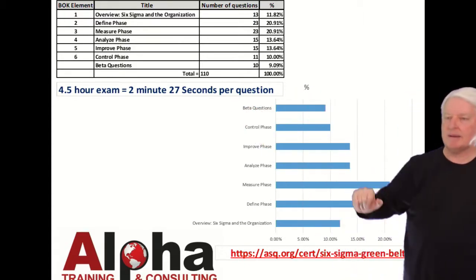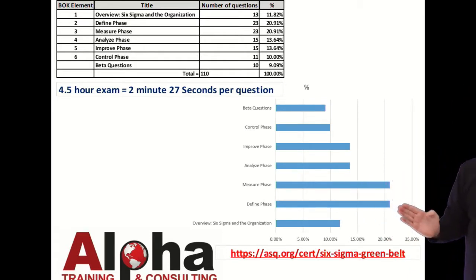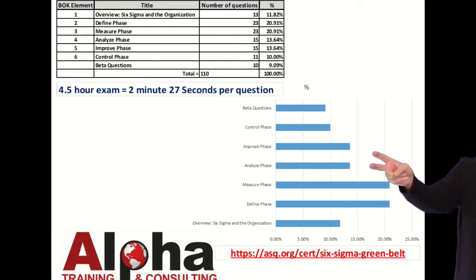Again, this bar chart teaches the same thing as the table, just a little more graphical. You can see the big hitters here is the measure phase and define phase. But the most difficult ones that students struggle with is the improve and analyze phase.